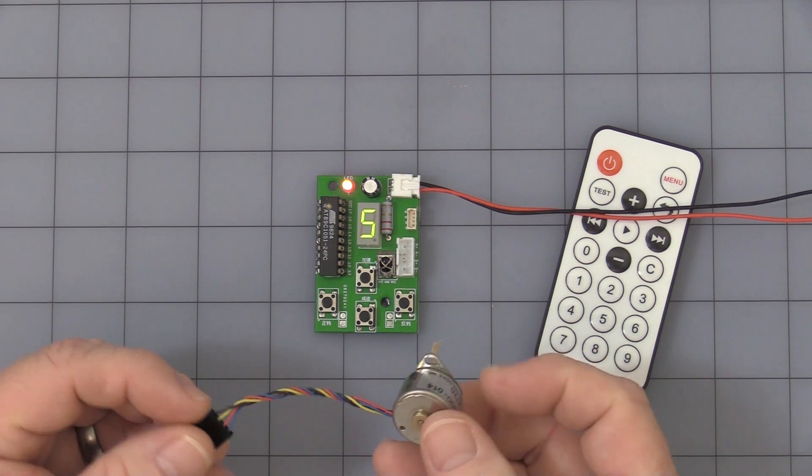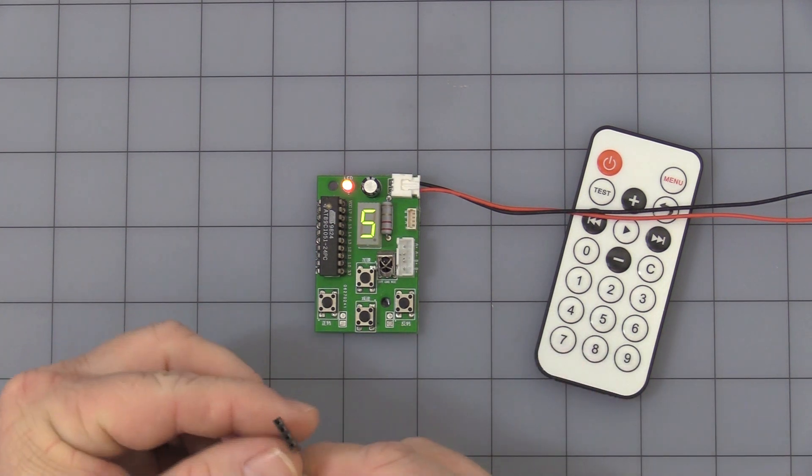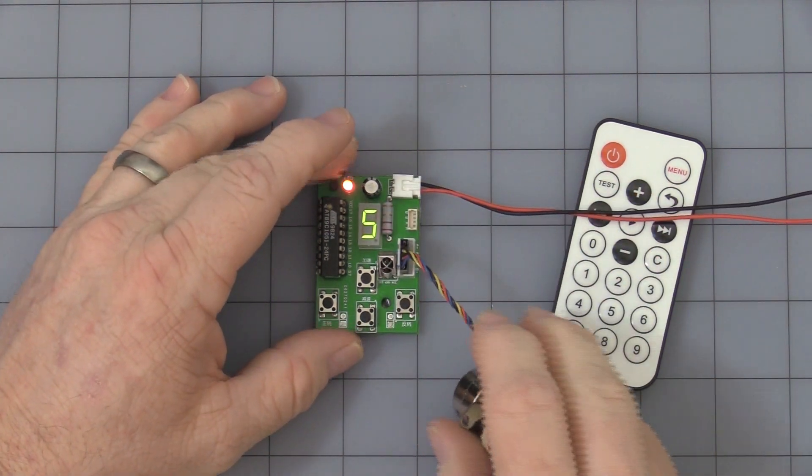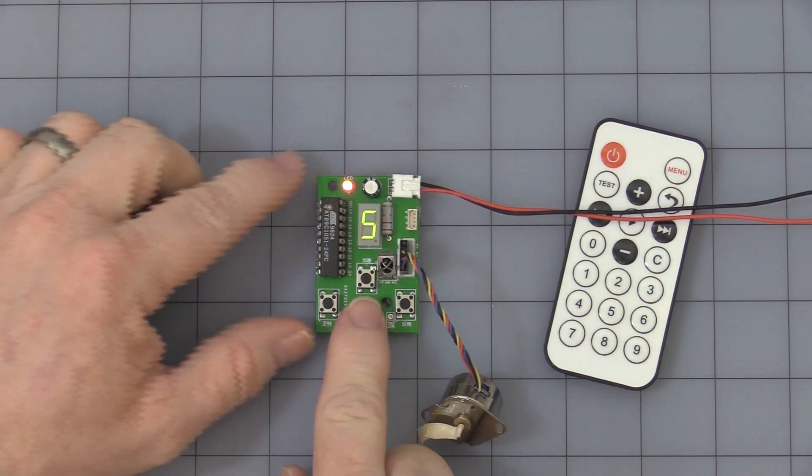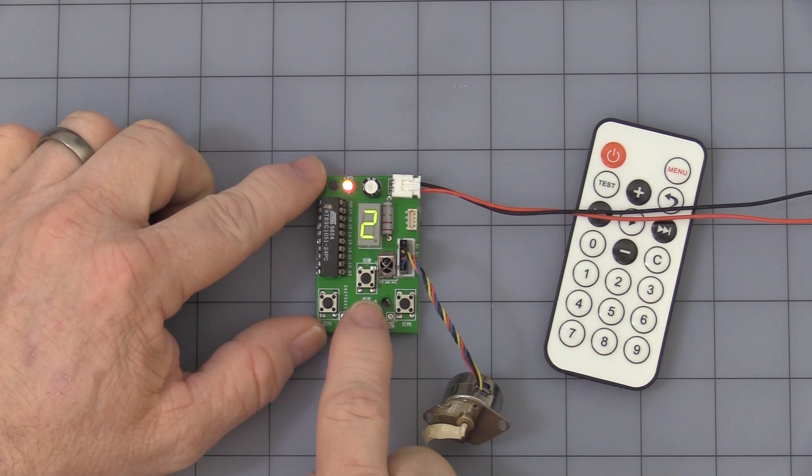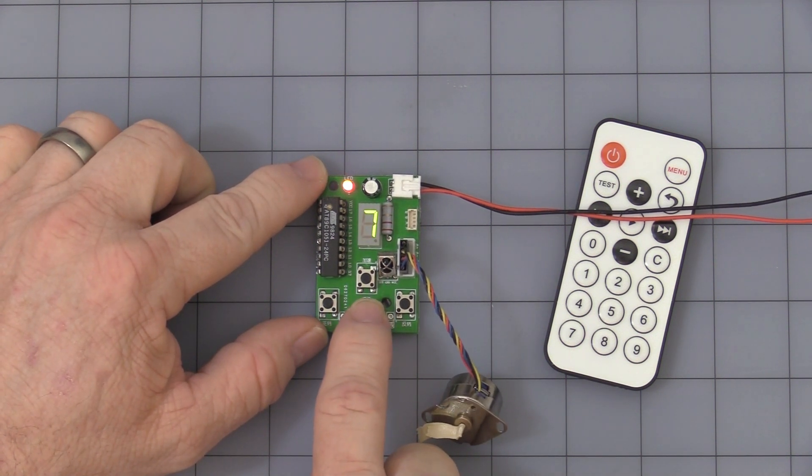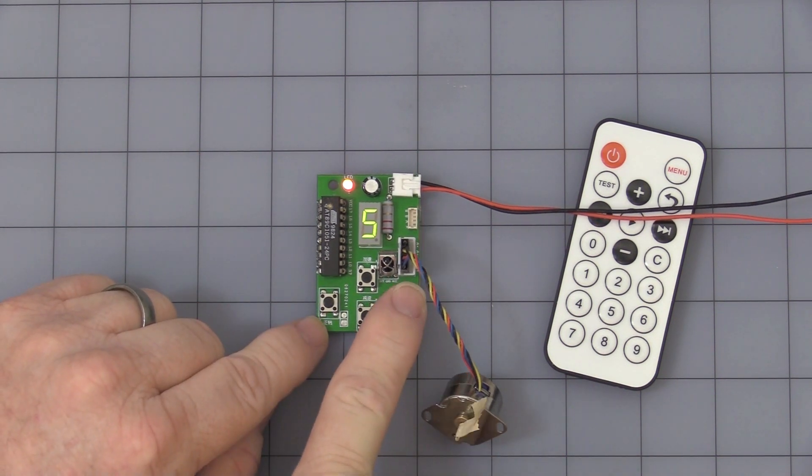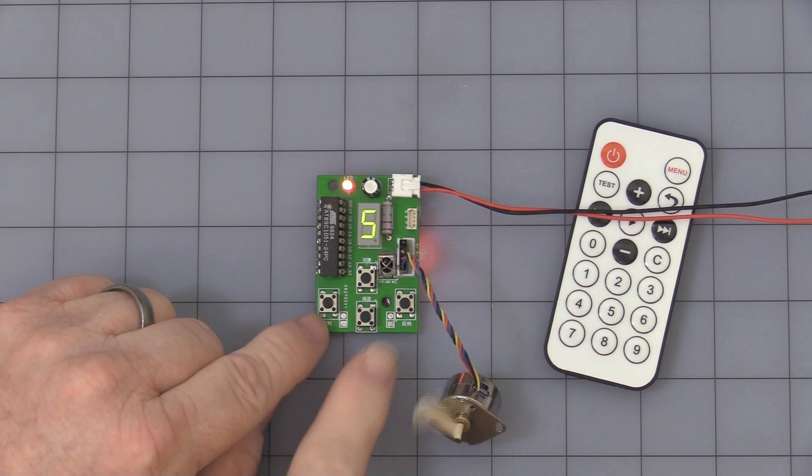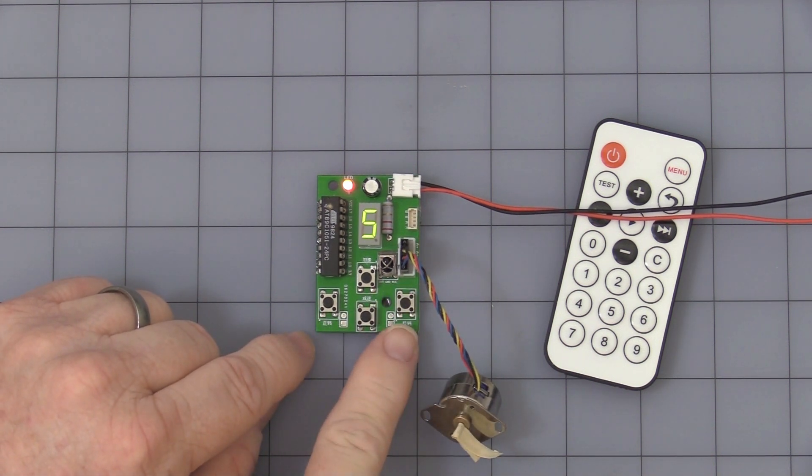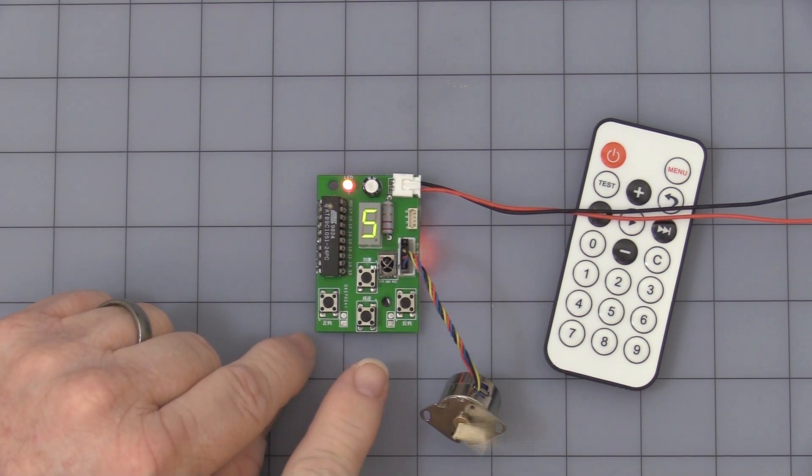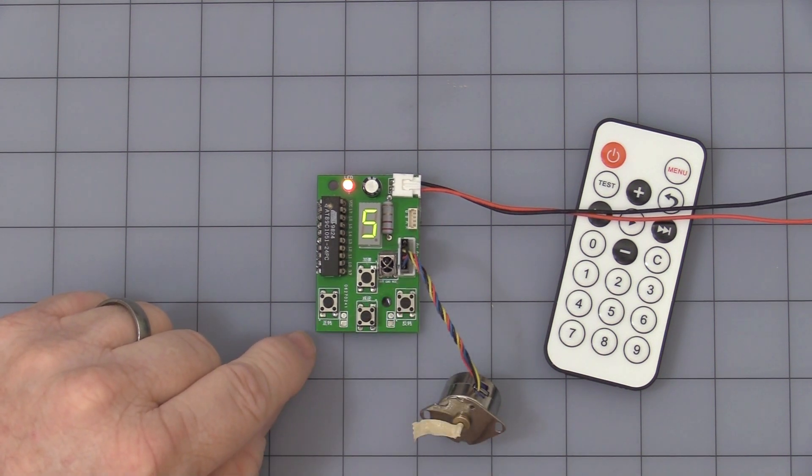But I just happen to have a small one with the correct pin spacing, so let me just go ahead and plug this in here. You have your speed, you have up to 9 levels for your speed, and this controls direction. And to stop you hit the same button twice. So if you're going one direction, you flip the other direction, you must hit it again to stop it.